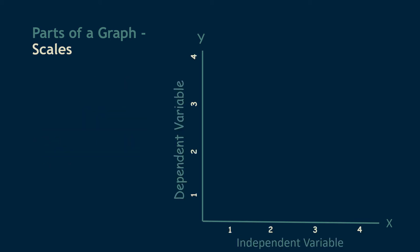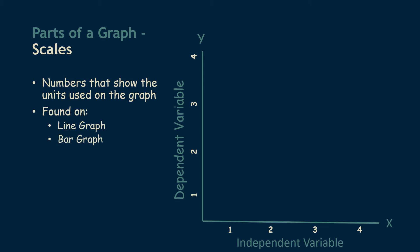Next we're going to look at scales. Scales are the numbers that show the units on the side of the graph — they show how big any one magnitude is. They're found on line graphs and bar graphs, and frequently on bar graphs the x-axis scale might show words instead of numbers.